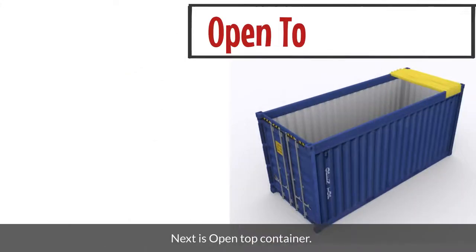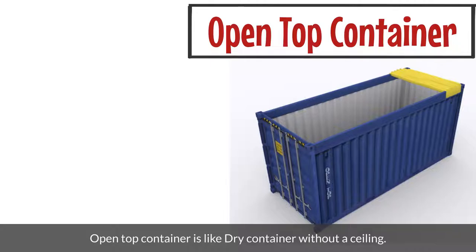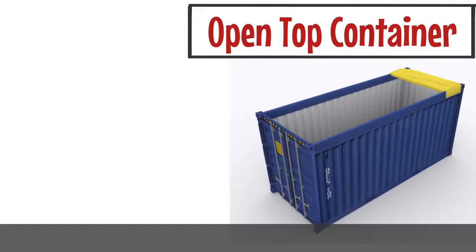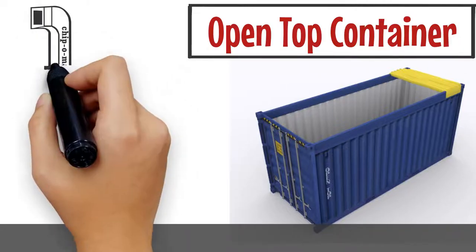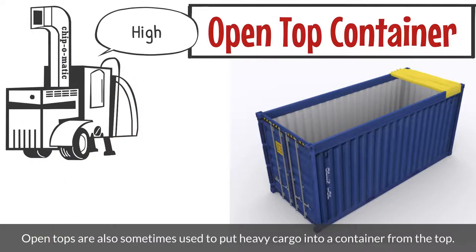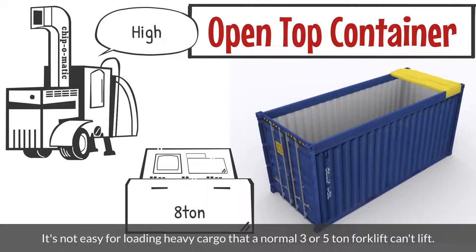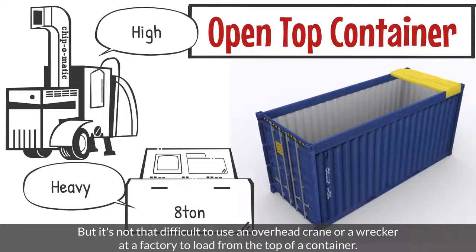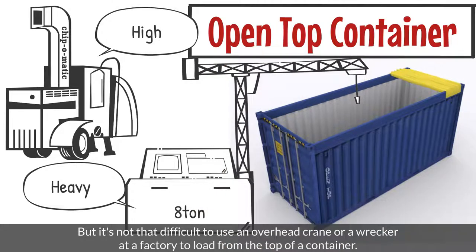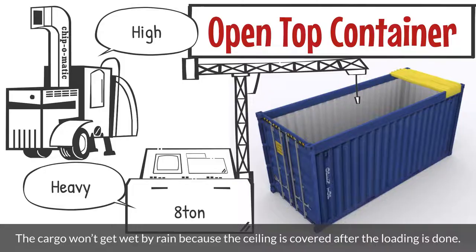Next is the open top container. An open top container is like a dry container without a ceiling. Since there is no ceiling, it is used for tall cargoes. Open tops are also sometimes used to load heavy cargo into a container from the top. It's not easy to load heavy cargo that a normal 3 or 5-ton forklift can't lift, but it's not that difficult to use an overhead crane or wrecker at a factory to load from the top of a container. The cargo won't get wet by rain because the ceiling is covered after loading is done.